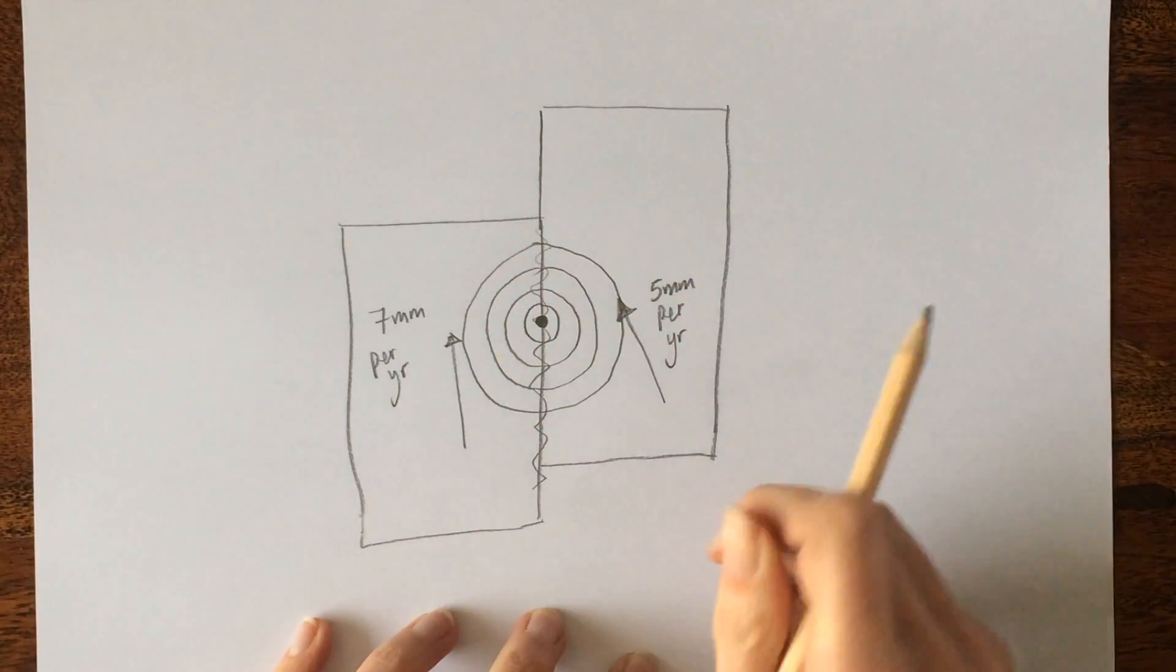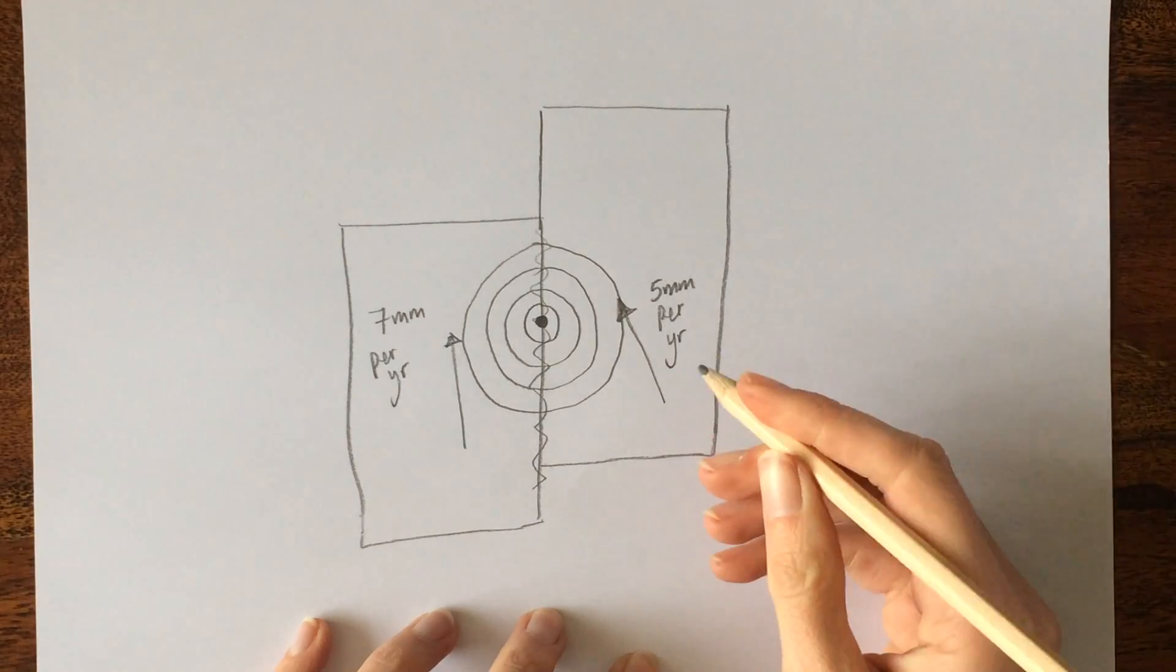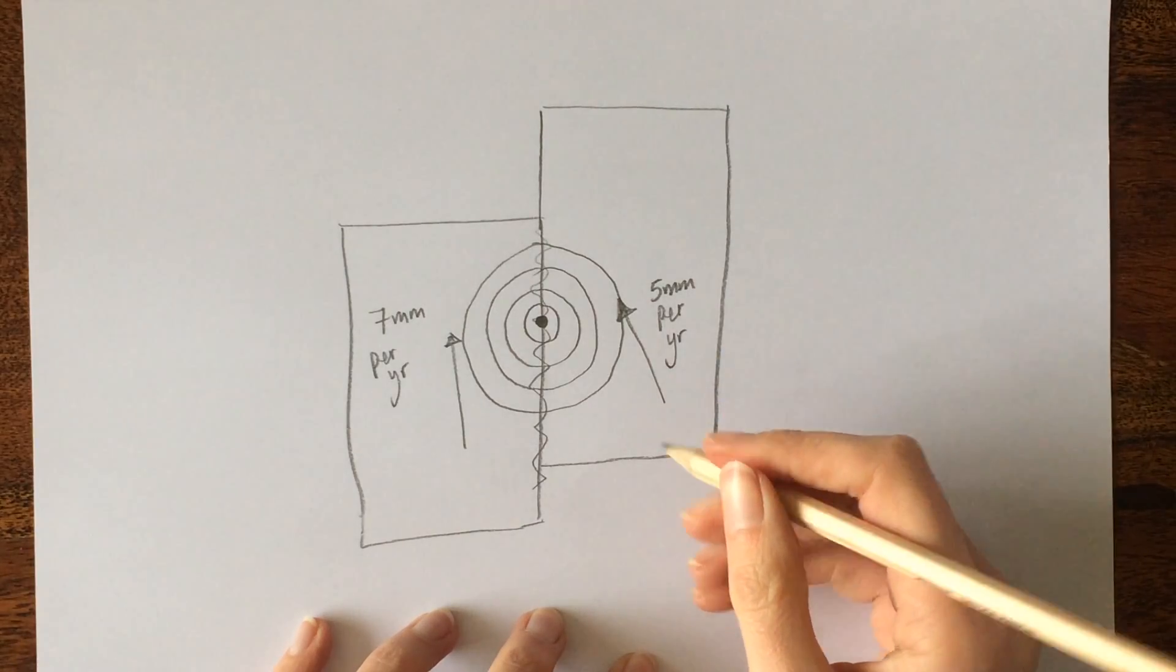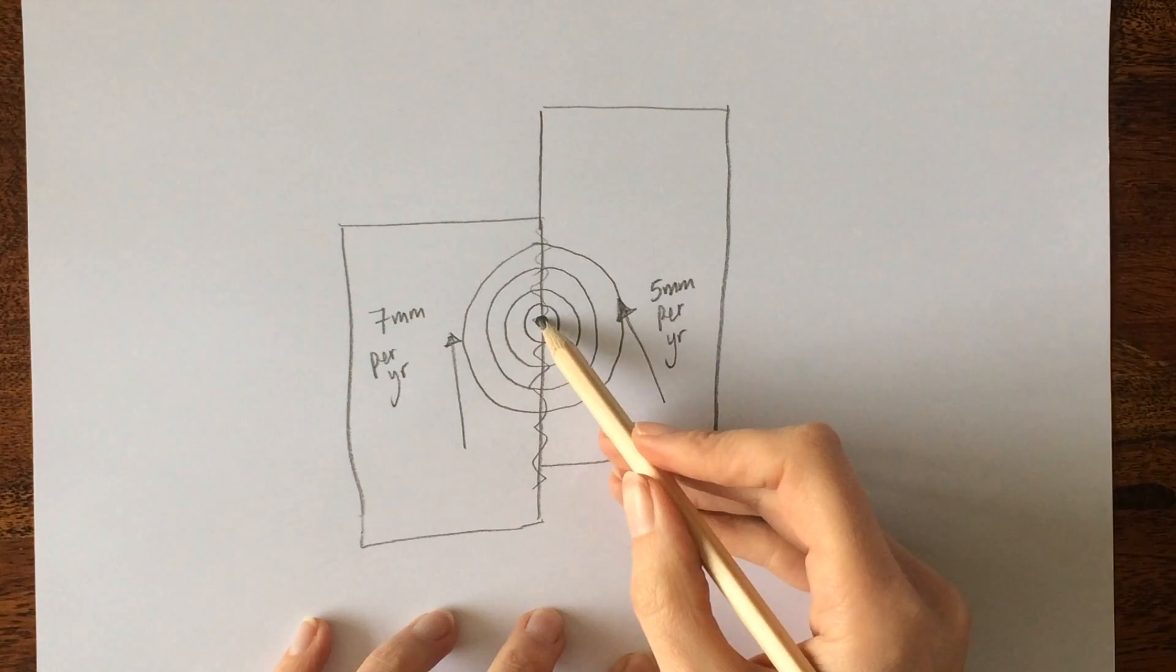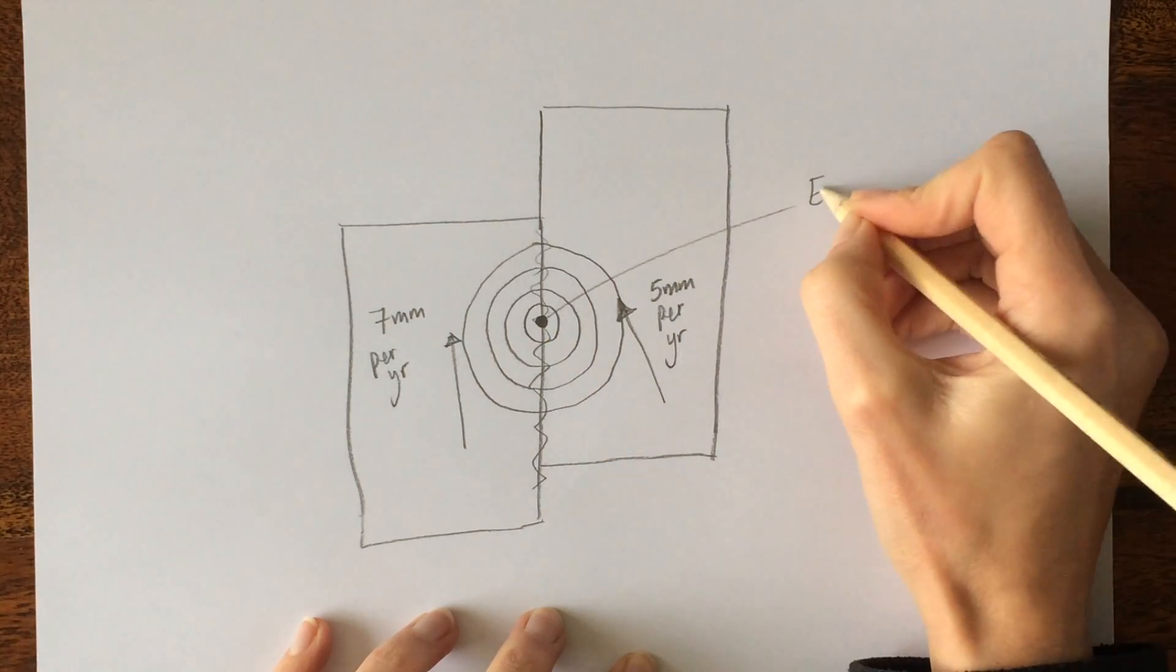The point of break deep below the Earth's surface in the rock is known as the focus. And where it arrives on the surface here, where we can see, that is known as the epicenter.